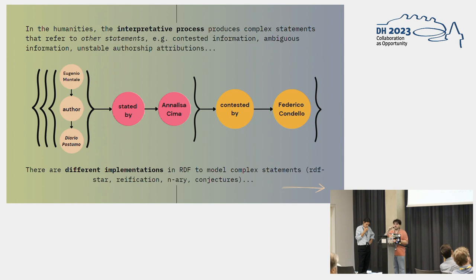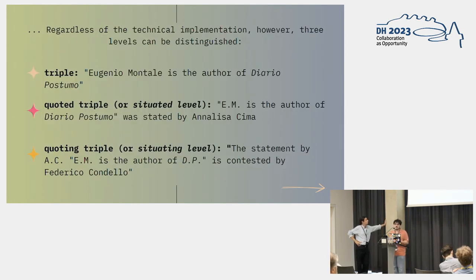So in RDF, we have different ways of syntax to represent these kinds of statements about statements about statements. For example, such as RDF star, reification, n-ary relations, conjectures, and so on. But regardless of the implementation we use on RDF, we can distinguish three main levels. The first one is the level of the triple, or the basic information that we have. For example, Eugenio Montale is the author of the Aero Postumo. Then we have the level of the quoted or situated level, in which the information gets some context or provenance about that first triple and first information. And we can say, for example, Eugenio Montale is the author of the Aero Postumo, which was stated by Annalisa Cima. And then the new context or the situating level, the statement by Annalisa Cima that Eugenio Montale was the author of the Aero Postumo was contested by Federico Condello.